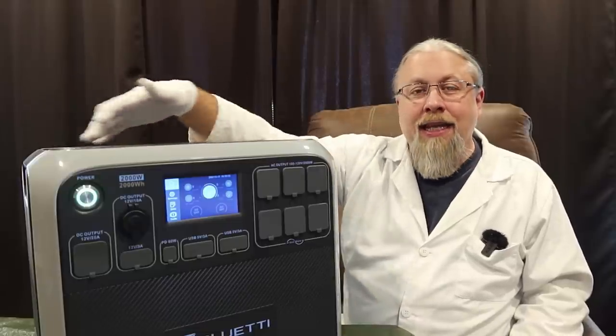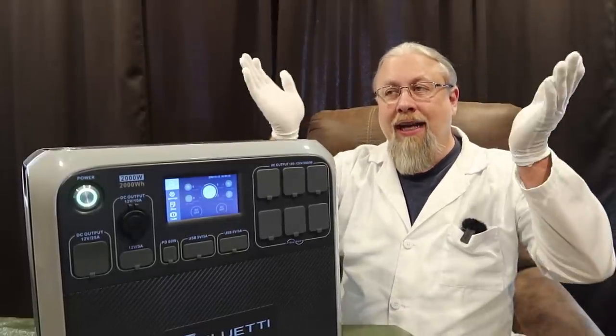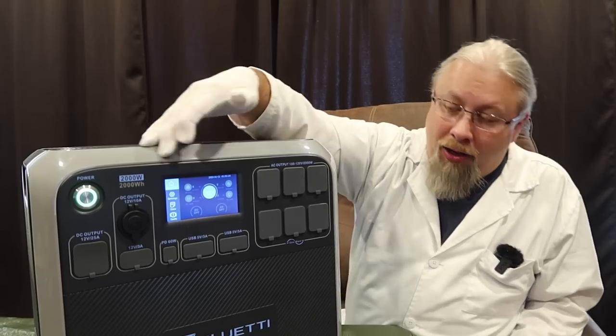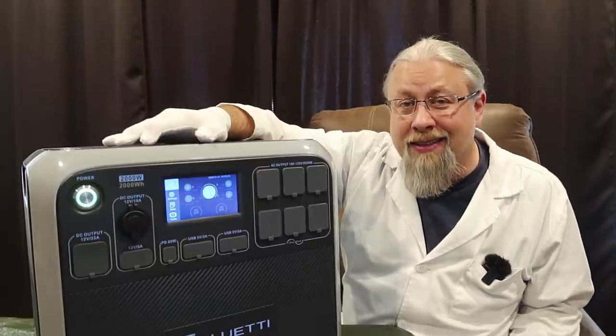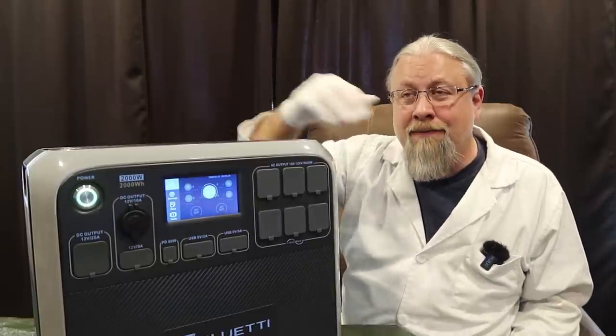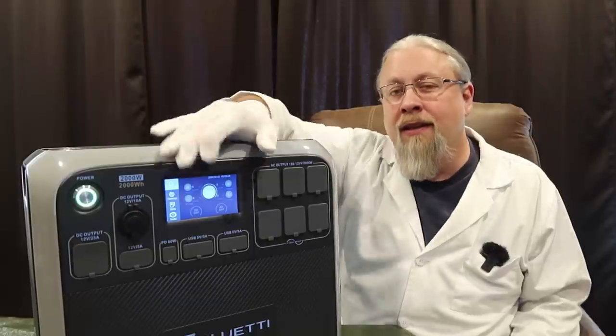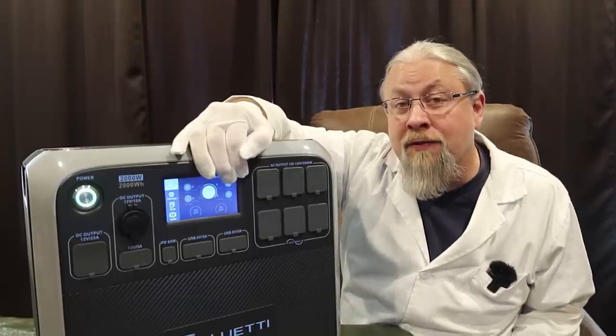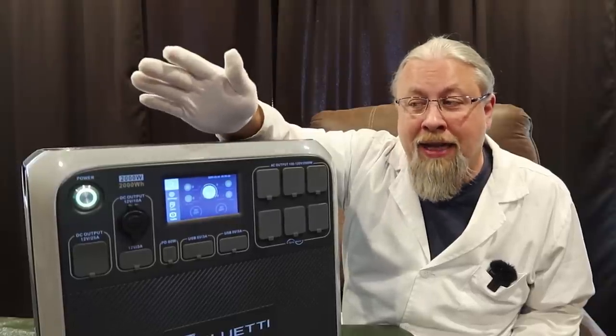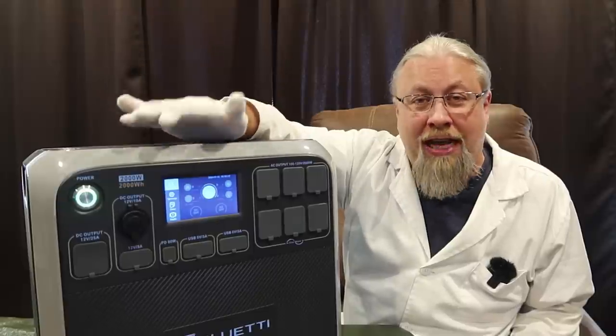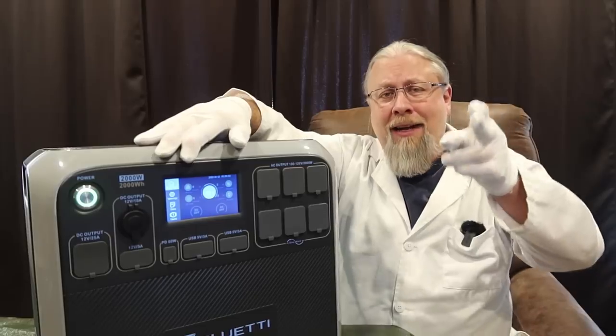It's the new Bluetti AC200P, and what does the P stand for? I have no idea. I looked all over this thing for the butter dispenser, and I didn't find it, so I don't think it stands for popcorn. Maybe it stands for phosphate, as in lithium iron phosphate, you know, that ultra-safe battery chemistry that everybody raves about, that you can charge and discharge thousands of times, last more than a decade. Let's find out.